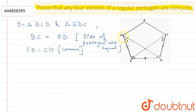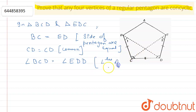Now here we see that angle BCD is equal to angle EDC, because all angles of a pentagon are equal. So this side equals this side, this angle equals this angle, and this side is common.